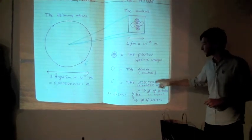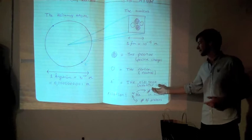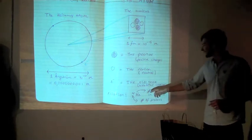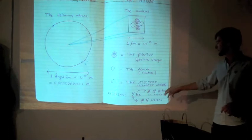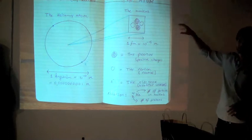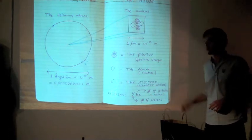So the scientific notation for this thing is 4 over 2 helium. It means that there's four particles in the nucleus, of which two are protons.